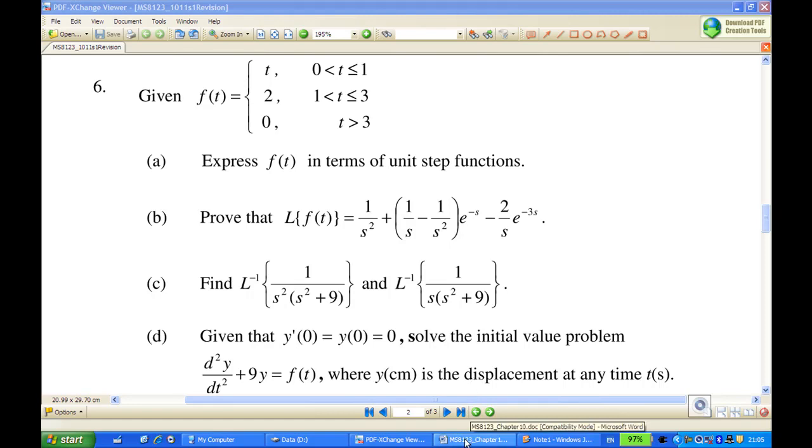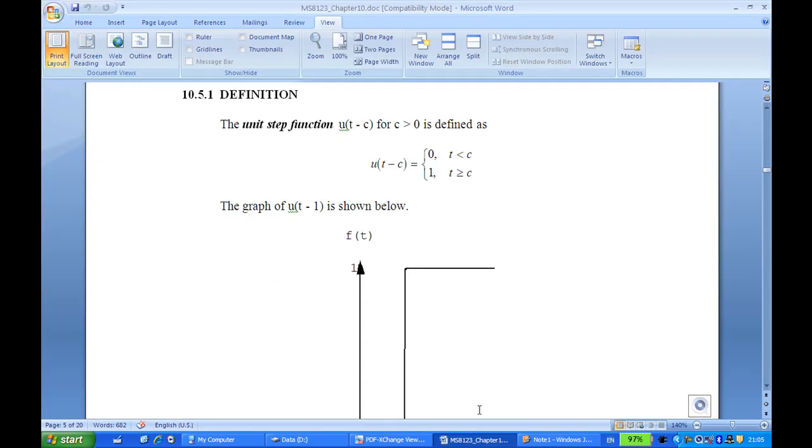First, we recall what is a unit step function. A unit step function u(t-c) for any c greater than 0 is defined as 0 for t less than c, and it's 1 for t greater than or equal to c.